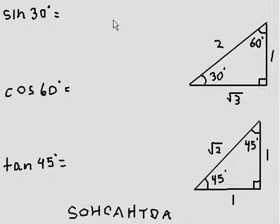So sine of 30 degrees. We're going to be looking at this special triangle right here, and sine is opposite over hypotenuse. So it's a ratio, I'm going to put a fraction sine there.